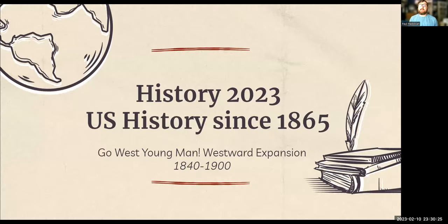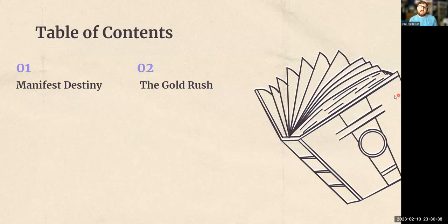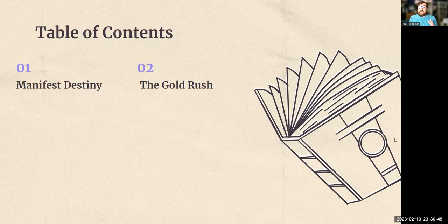Hello everyone, and welcome to Lecture 2 for Chapter 17 for Industry 2023. That's 'Go West, Young Man' — Western Expansion, 1840 to 1900. In this lecture, we only got two topics we're going to be covering, and that's Manifest Destiny and the Gold Rush. This is going to be a very high-level overview of things discussed in the textbook. I just want to give you guys background for what's going on with westward expansion.